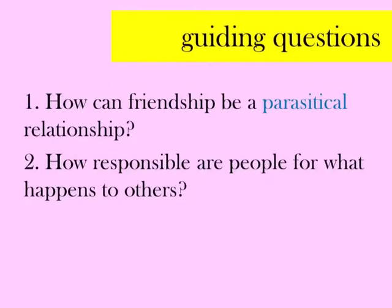Whenever we begin reading a novel, there are some questions we need to frame our novel with so that we can better understand the story. When reading this novel, these are the two questions we want to think about. For starters, this novel is about friendship, and what we want to look at is: when does friendship become a parasitical relationship?